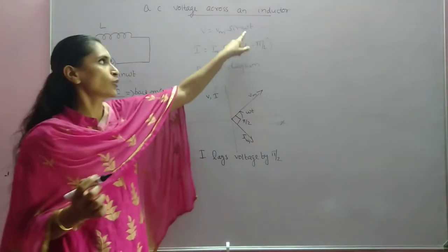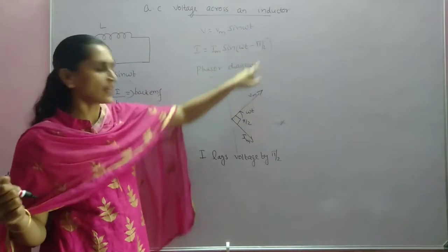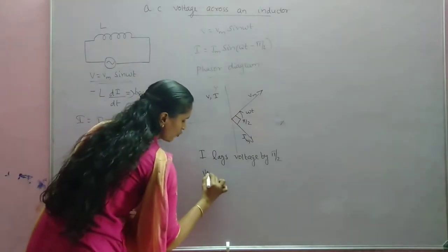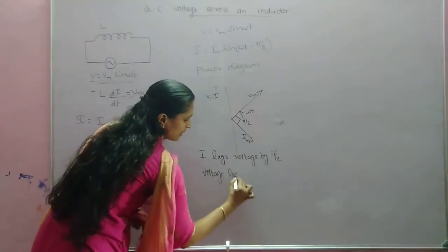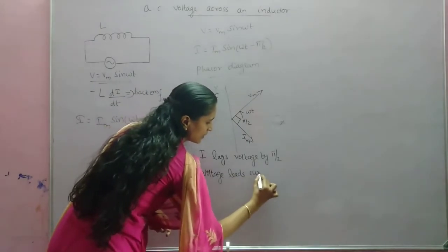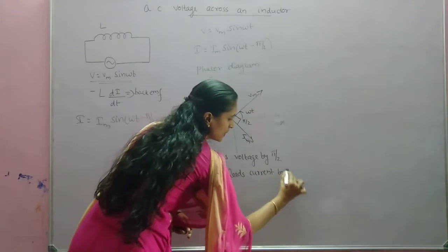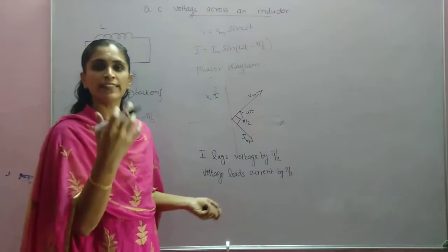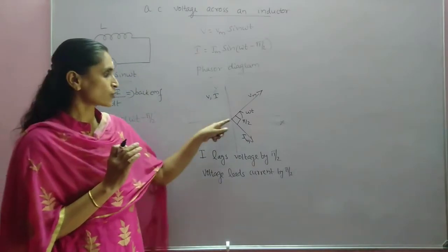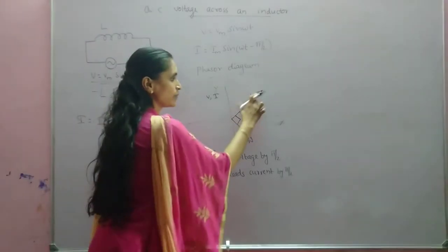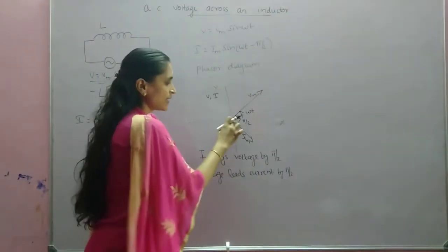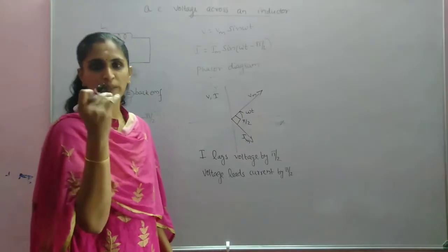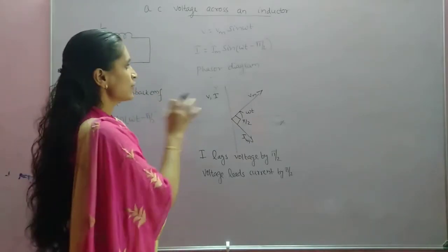We can say that current lags voltage by π/2, because one is sin(ωt) and the other is sin(ωt − π/2). Or we can say that voltage leads current by π/2. Both are correct. Either we say current lags voltage by π/2, or voltage leads current by π/2. When plotting the graph, current should be shown lagging voltage by exactly π/2.